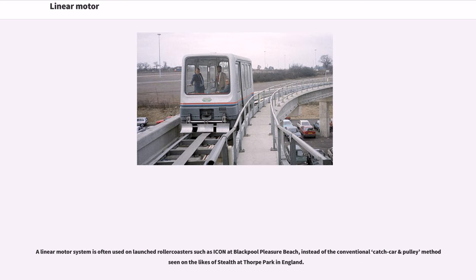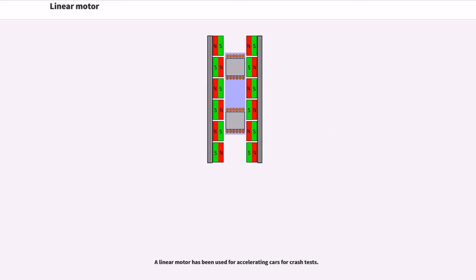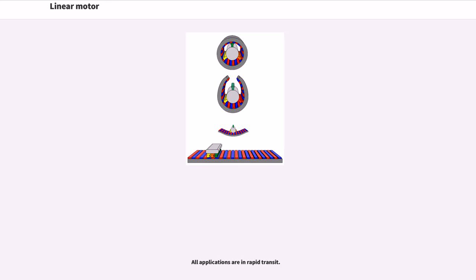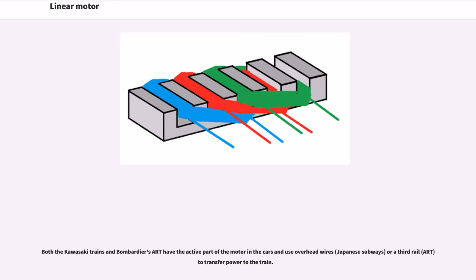A linear motor system is often used on launched roller coasters such as Icon at Blackpool Pleasure Beach, instead of the conventional catch car and pulley method seen on the likes of Stealth at Thorpe Park in England. A linear motor has been used for accelerating cars for crash tests.